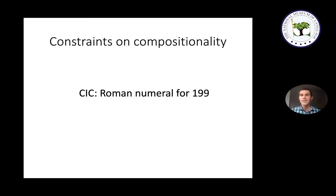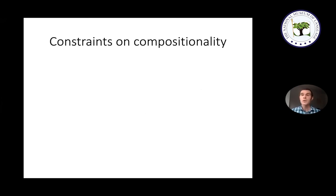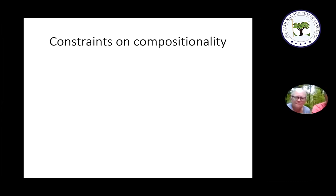This was driven home to me early in my crossword career when I submitted a puzzle that included the answer CIC, clued as 'Roman numeral for 199.' The puzzle was rejected partly because it was boring, but editors also gently informed me that CIC is not a valid Roman numeral — the correct one for 199 is CIX. Without knowing it, I had violated the rules that govern how you can put Roman numerals together.